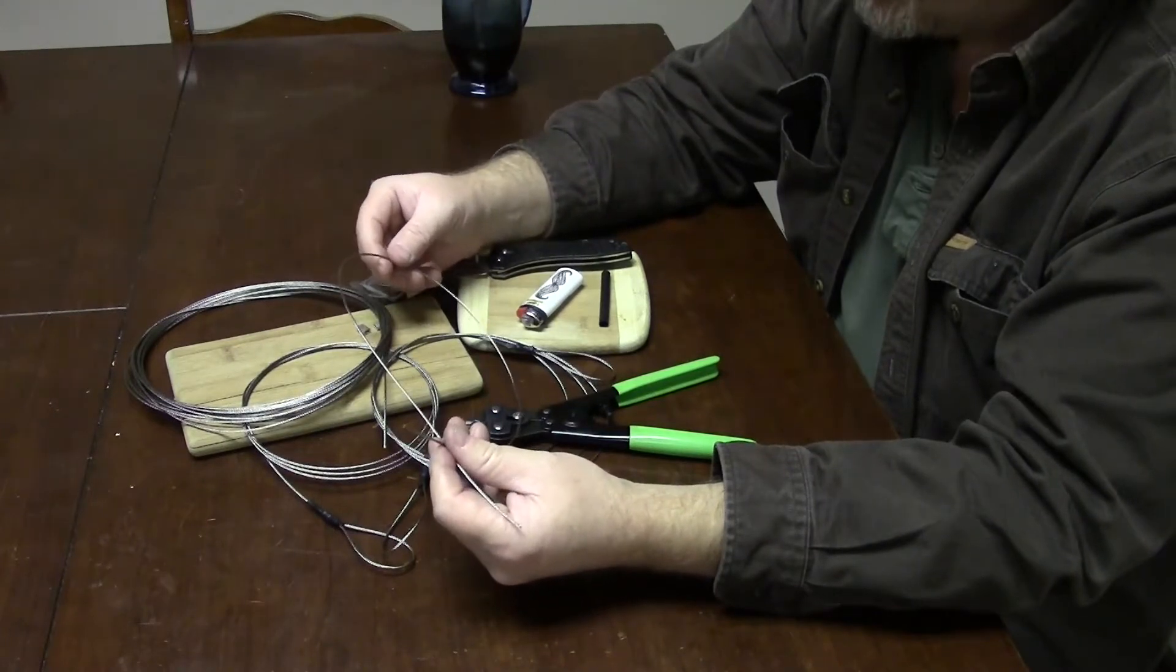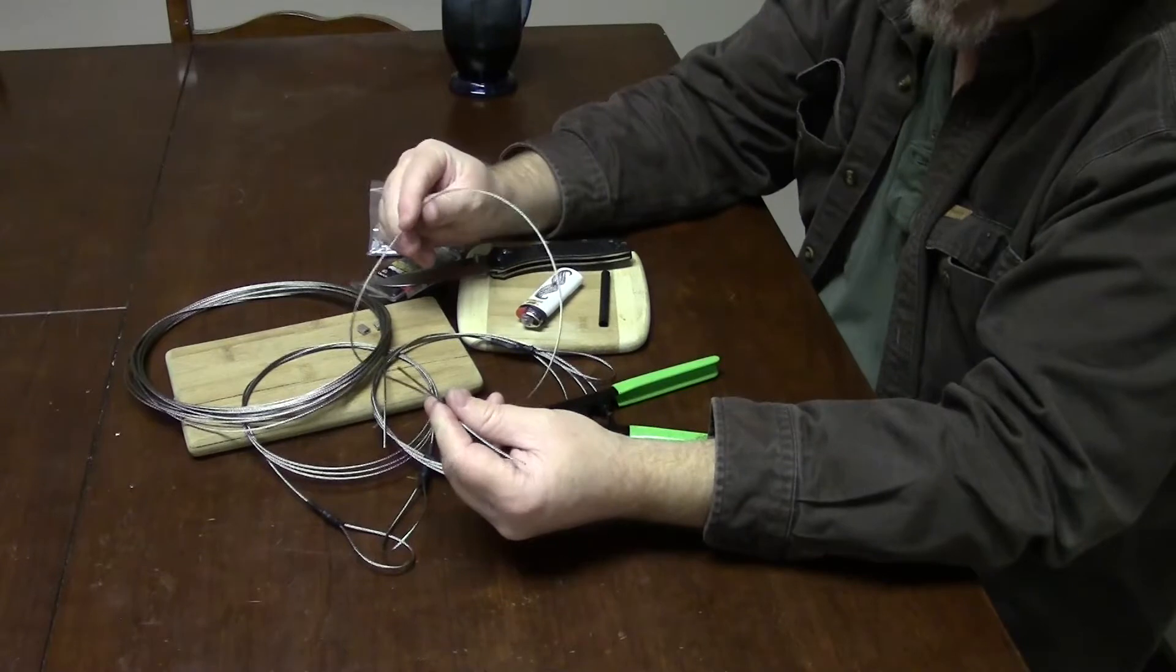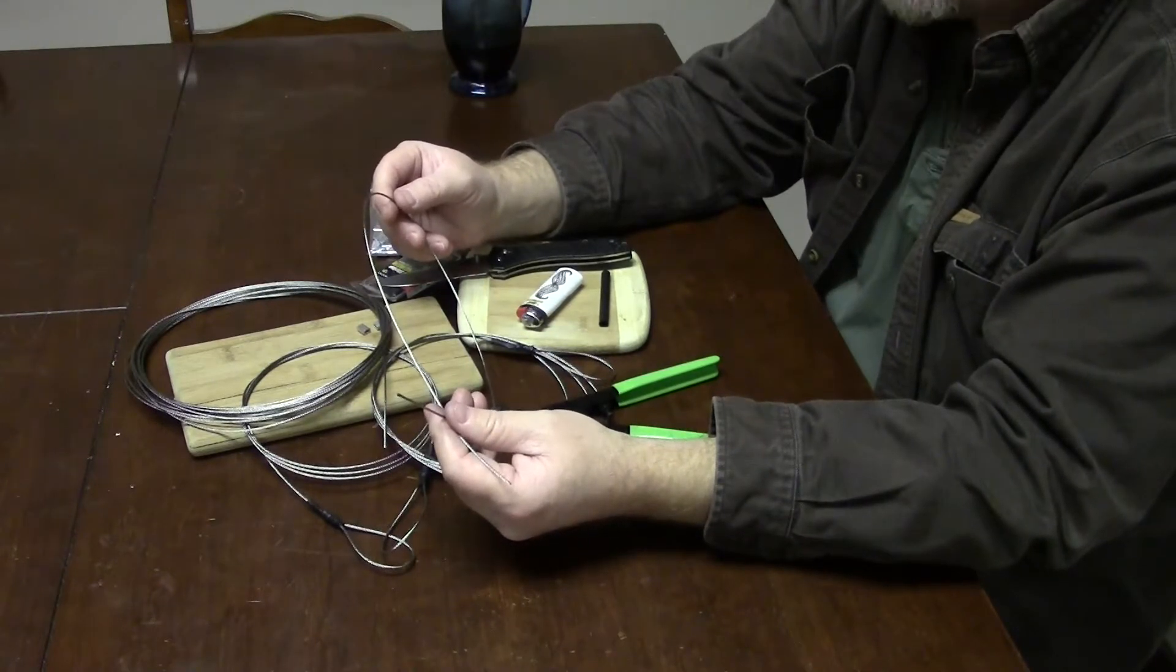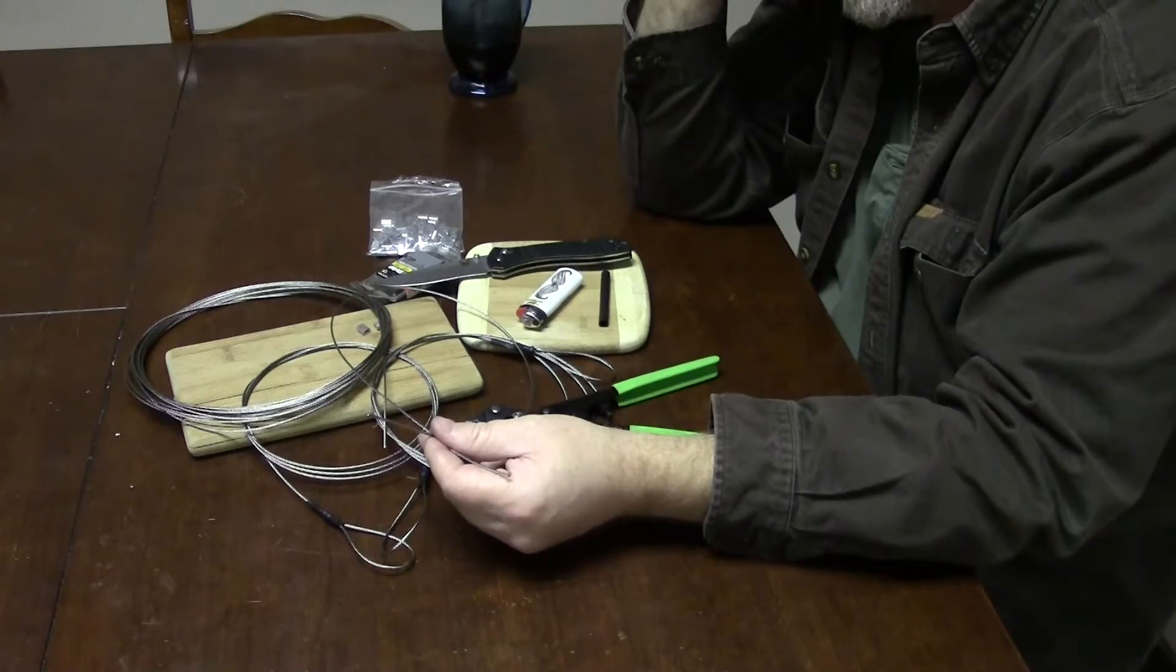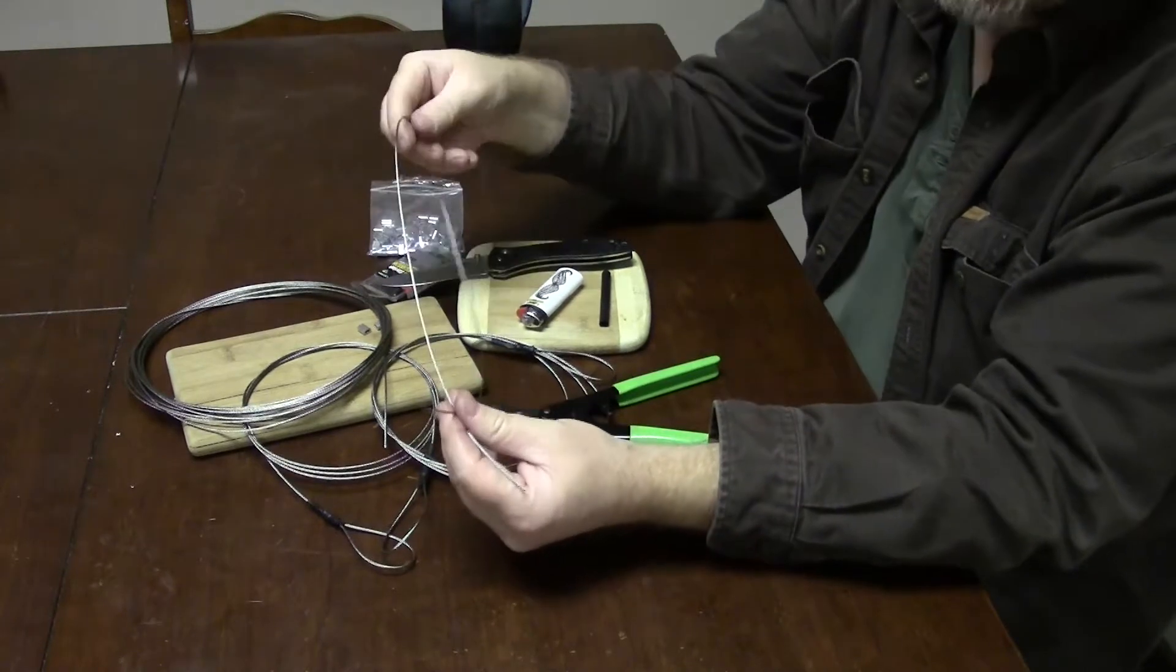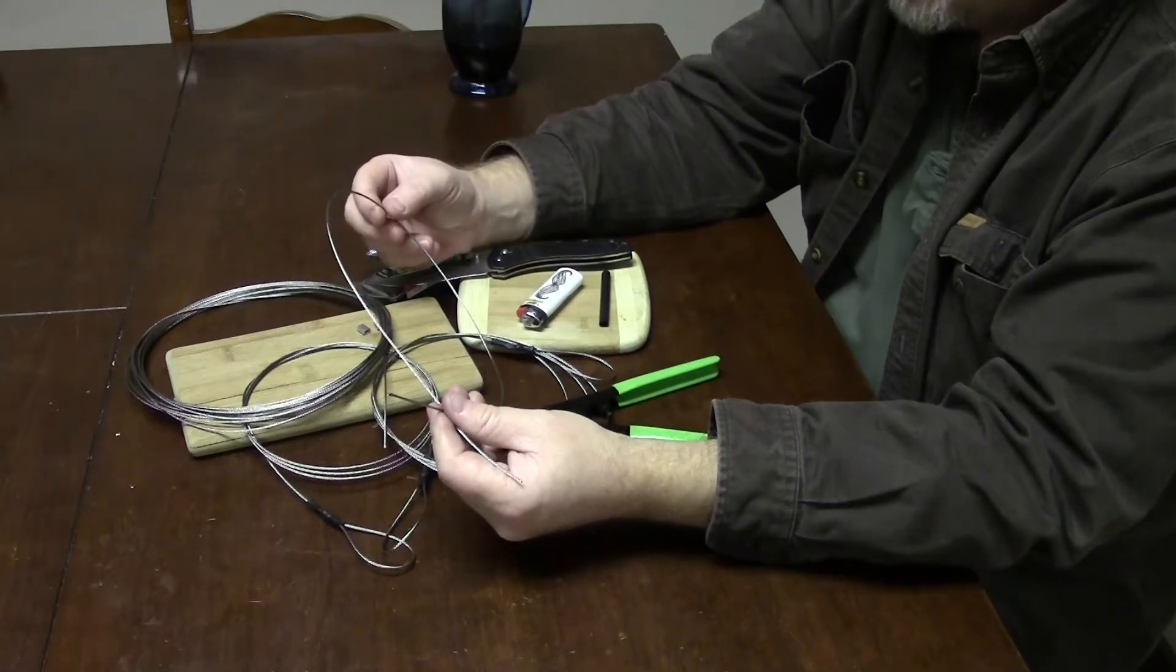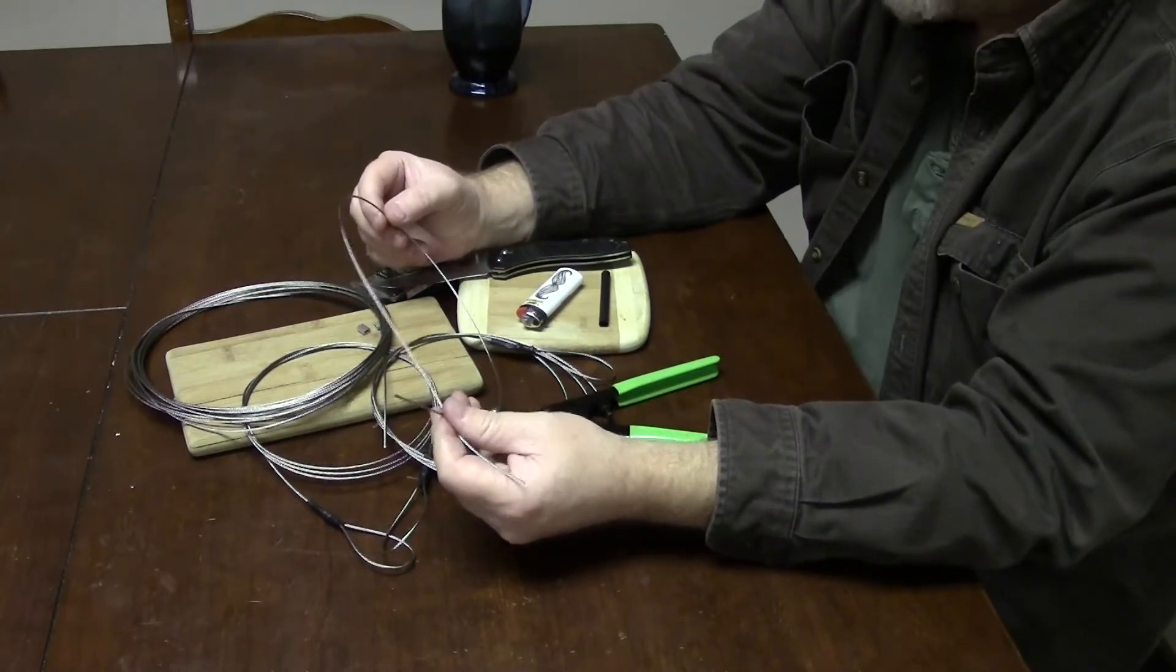Now when you look up this 1/16 stainless steel wire rope, you'll see a couple of numbers. Depending on what company it comes from, it's either 450 pound test or 480 pound test, and then it'll say that it's got a 90 or 100 pound working strength. The best way to think about working strength is, that's what OSHA would say. If you've got more than 90 or 100 pounds hanging off of this, you shouldn't be trusting it.